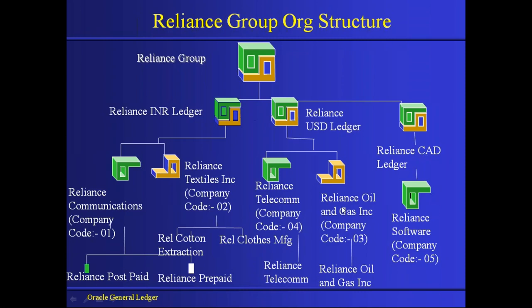Without AGIS, you would manually log in to Reliance Telecom, create an AR invoice, then log in to Reliance Oil and Gas AP responsibility and create an AP invoice. There could be scenarios where the AR invoice is created but the AP invoice is missed — creating an unbalanced intercompany transaction. Oracle introduced the Advanced Global Intercompany System to avoid this manual effort and ensure both invoices are created upon approval.